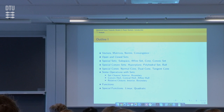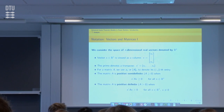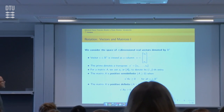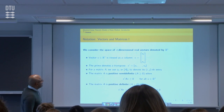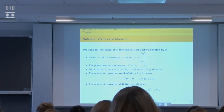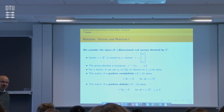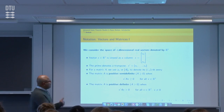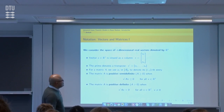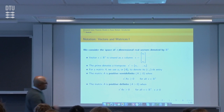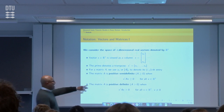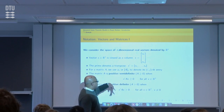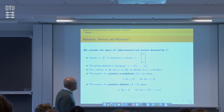We will start by reminding everybody that we will be working in a vector space — specifically, the space of n-dimensional real vectors. Whenever I talk about a vector, the vector will be viewed as a column vector. If I use a prime or a transpose, it represents the transpose of the vector. For any matrix, I will use block notation to emphasize which elements are being employed, or I might just say capital A sub ij.